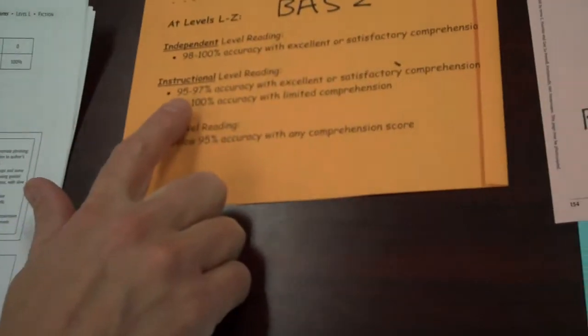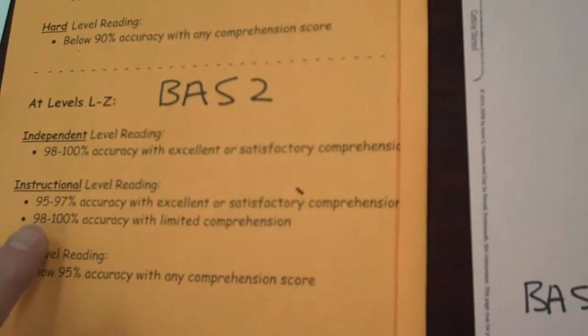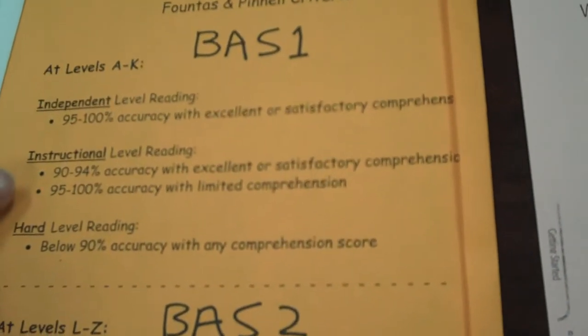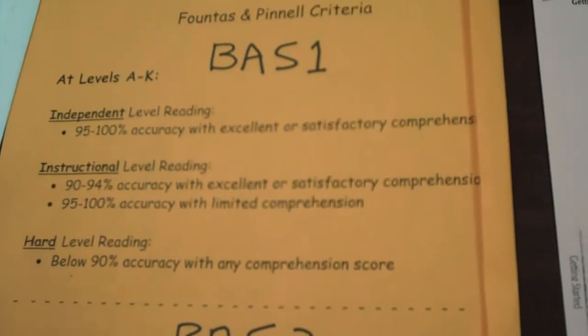But I did want to point one thing out that's different about the BAS 2. When you get to here, you have to be a little bit more careful because the accuracy rate for instructional level is a little bit higher than on the BAS 1. If you notice, the instructional level is just above 90, but on the BAS 2, you have to be at 95%. So you want to make sure you're paying close attention to how many errors they got and make sure you figure out the correct instructional level.